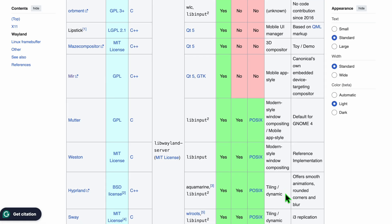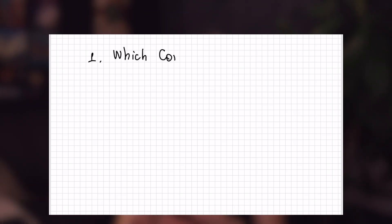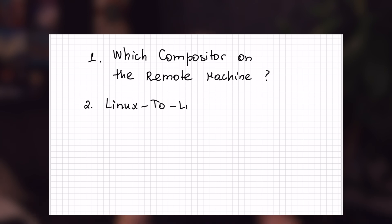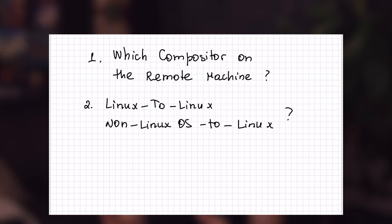Just based on this alone, you can see that Linux distributions, depending on how they're built, which desktop environment they use, and what kind of window manager they use, can have quite different features. One of the key factors deciding which third-party tool to use will really depend on which compositor is used on the remote machine — and that's beside whether we're connecting from Linux to Linux, or from a non-Linux OS to Linux. There's also a third factor: whether you want full remote desktop access or are okay with only single app-level access.